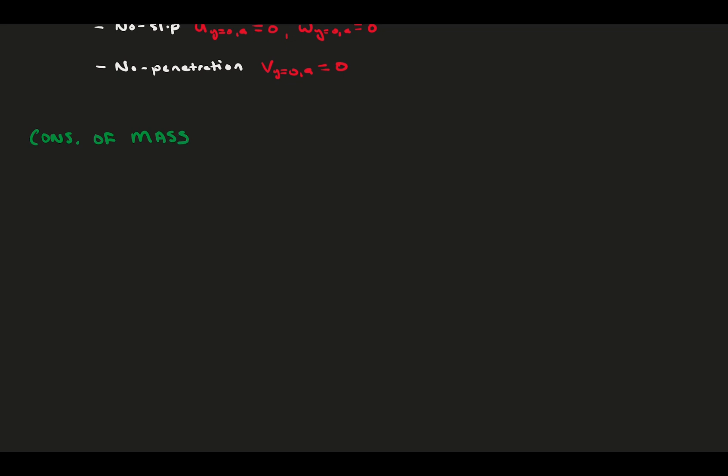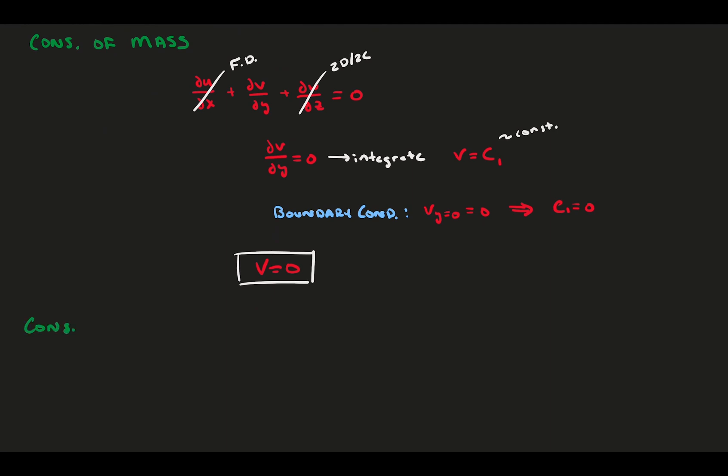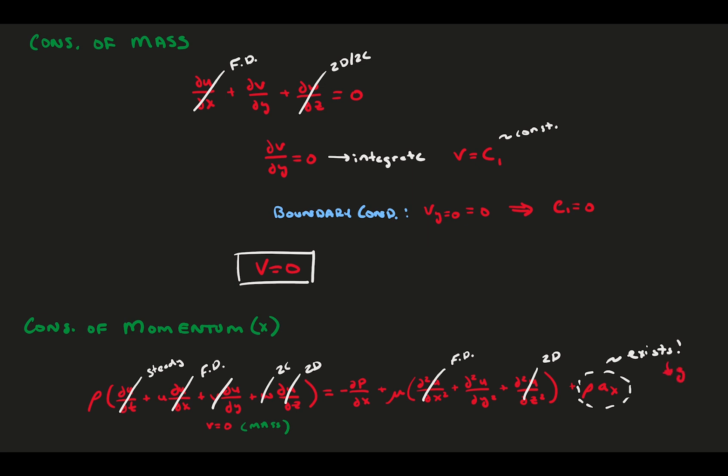We take our assumptions and boundary conditions as ammo, and begin with the conservation of mass. Two assumptions make it dv dy equals zero. Integrate this to find v is a constant, and our boundary condition at the wall for the v velocity tells us that v must be equal to zero. We can move right on to the conservation of momentum in the x direction. Steady, fully developed, 2c, 2d take down a bunch of the terms here. v is zero from the conservation of mass. However, we do have a body force term left over due to gravity.